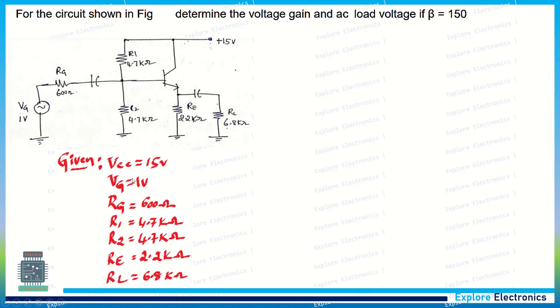In the circuit you can see the given parameters: Vcc = 50V, Vg = 1V, Rg = 600Ω, R1 = R2 = 4.7kΩ, RE = 2.2kΩ, and the load resistor RL = 6.8kΩ.